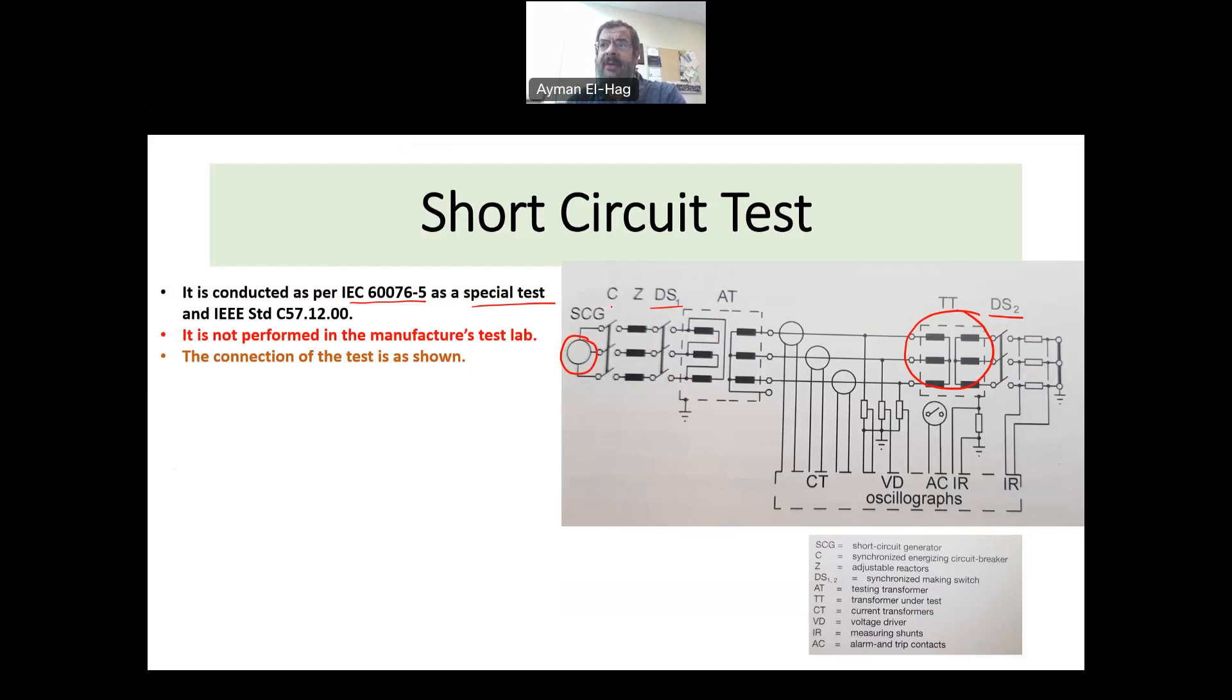The second version, which is the more preferable one, the more realistic one, you energize the transformer. So DS1 will be normally closed and this will be open. And then you close this to simulate as if the transformer is energized and then a short circuit happens to its secondary.